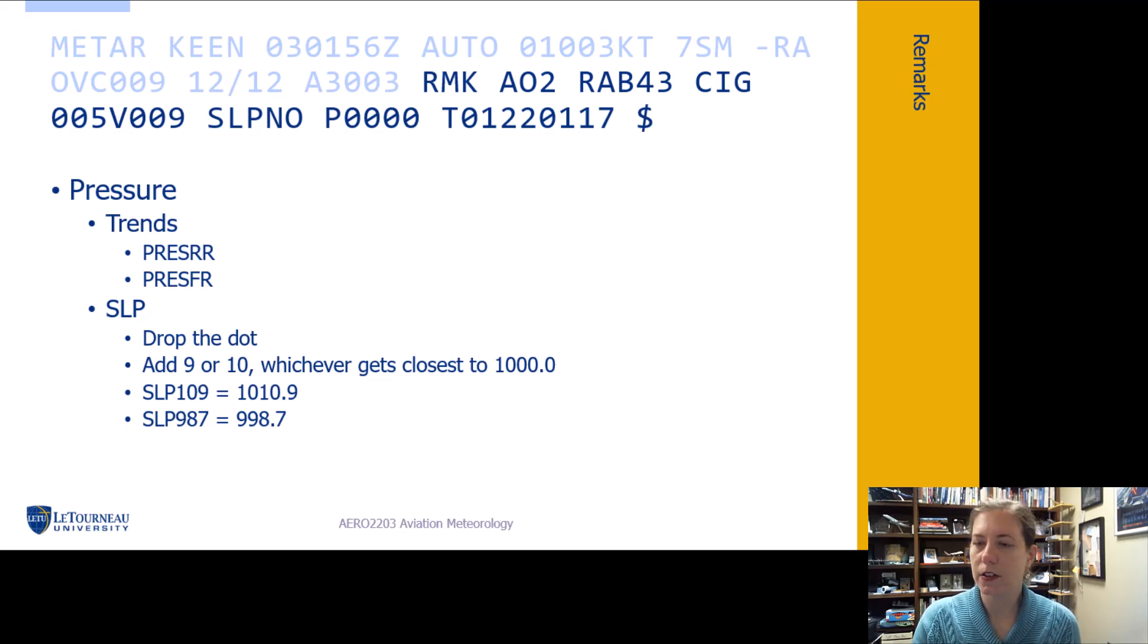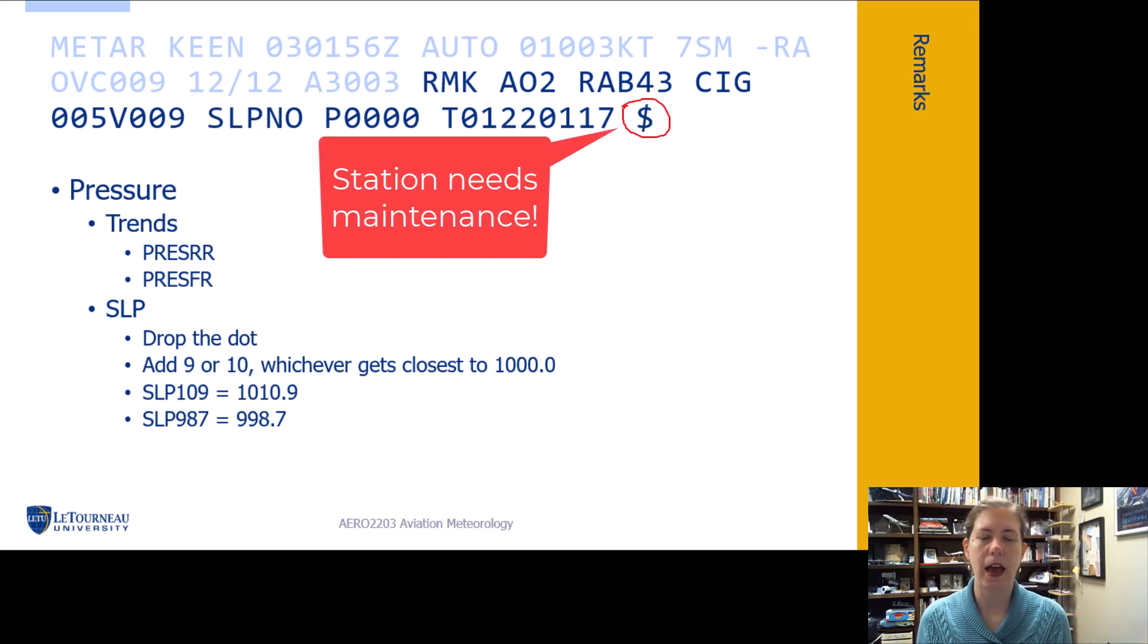That dollar sign. So the dollar sign on the end means that the people who run the station are about to have to spend some dollars to get that station checked out because something is wrong about that station. It's just a joke about dollar spending, but it's maybe a good way to remember it. Dollar sign means something's wrong with the system and we're going to have to get it looked into.